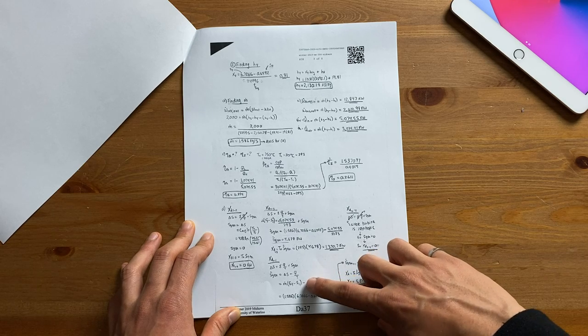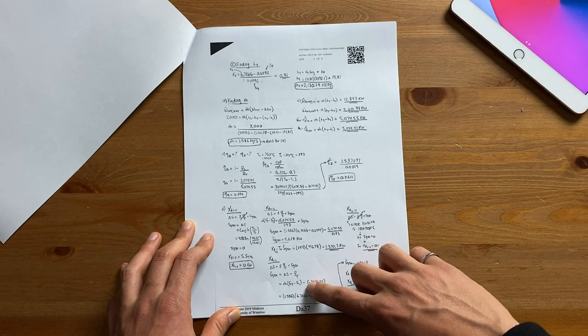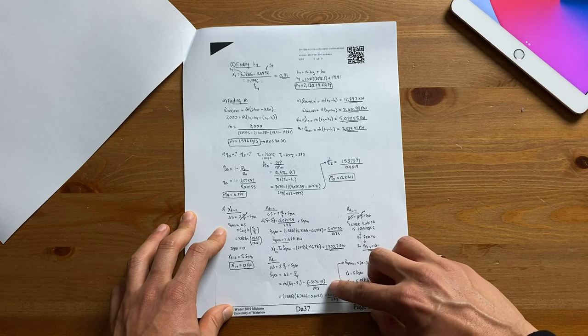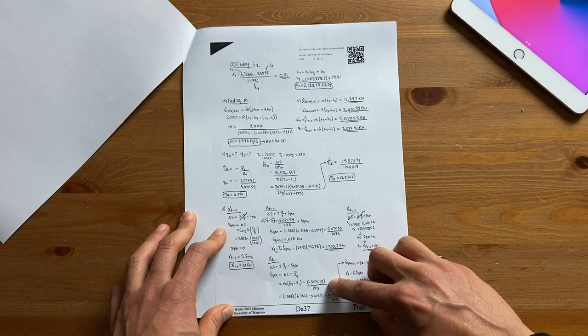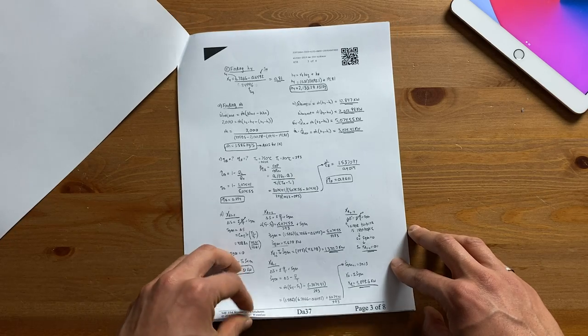For example here my solution for this particular line right here I wrote S4 minus S1 but the correct answer was actually S1 minus S4. If I had skipped that line I probably would have lost more marks since it would have been more difficult for the grader to know what I got wrong so this shows the importance of showing your work very clearly.